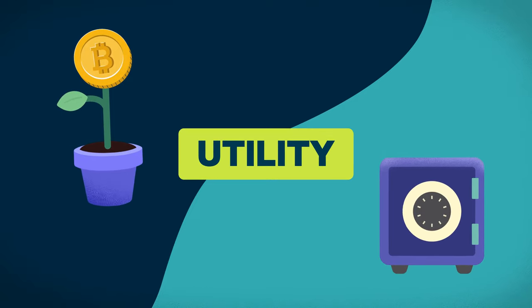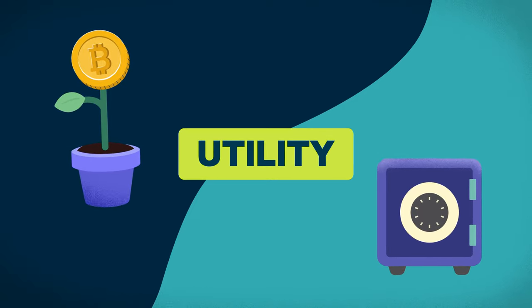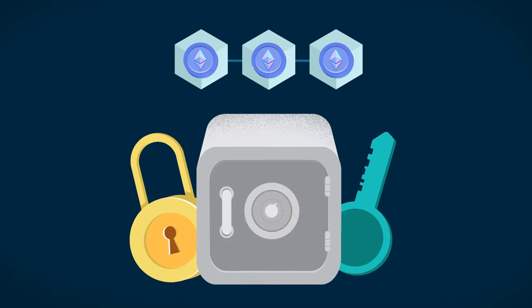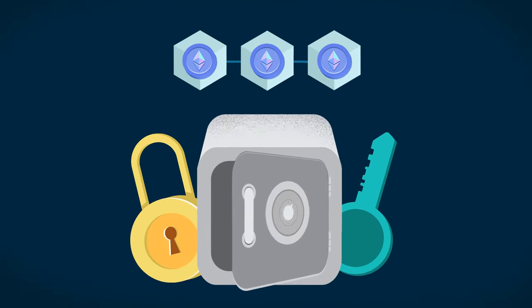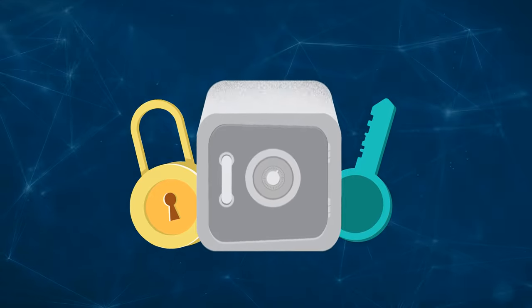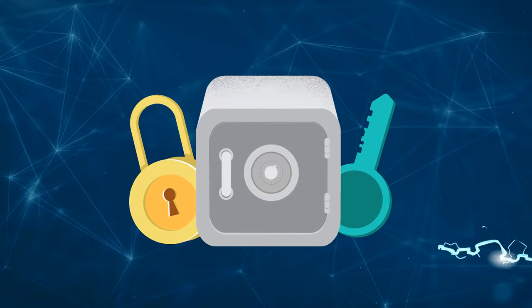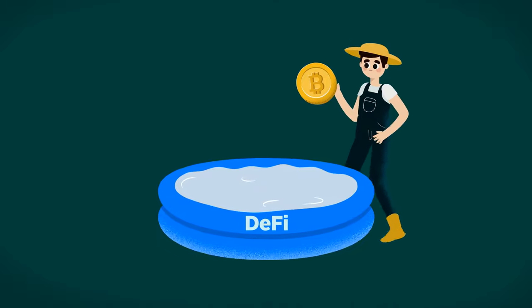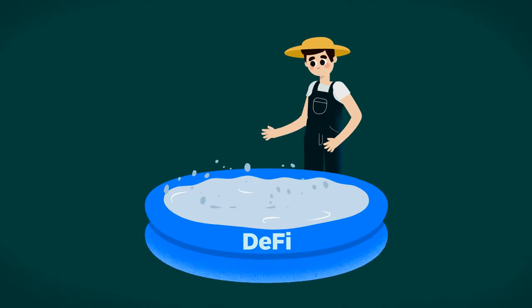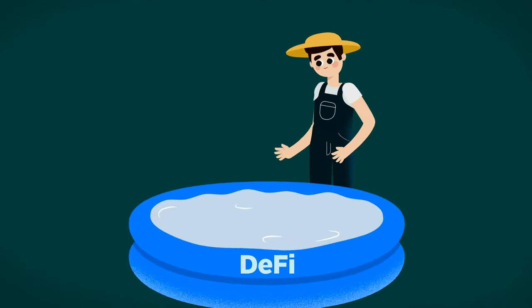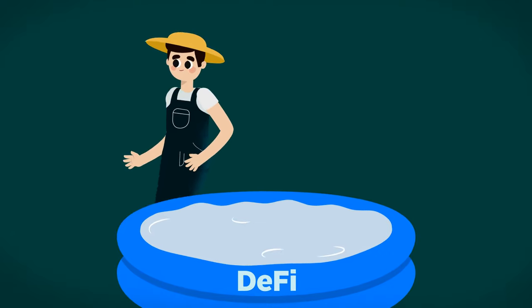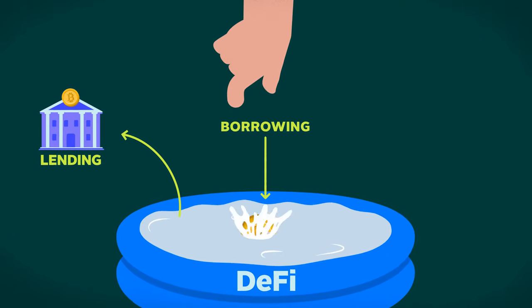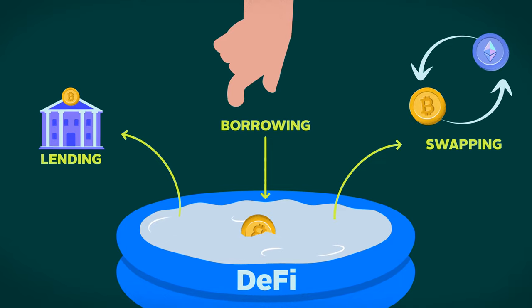Let's highlight some of them, starting with utility. As mentioned, staking serves security purposes for proof-of-stake blockchains like Ethereum, helping decentralize and strengthen the network. On the other hand, yield farmers typically deposit crypto into liquidity pools of DeFi protocols, which enable them to offer services such as lending, borrowing, swapping, or leverage trading.